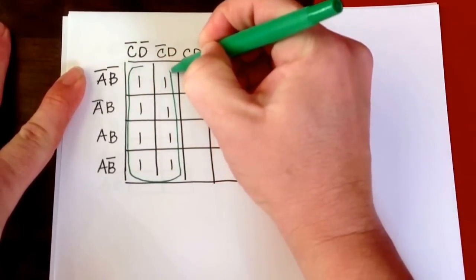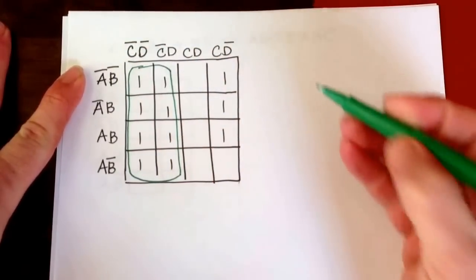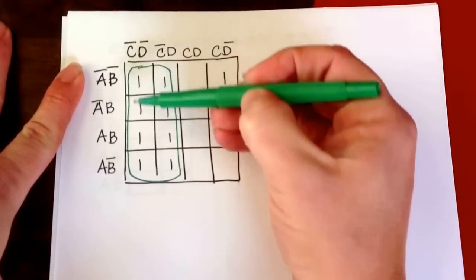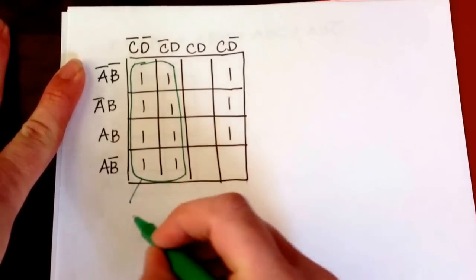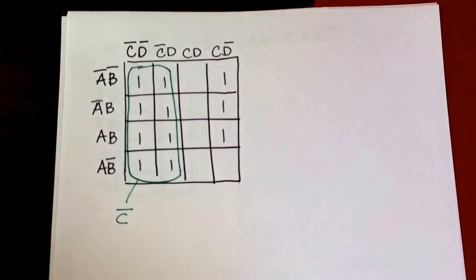For that group, as I move all the way through here, A and B change, and from here to here D changes, so this simplification is simply not C. Then I want to look for my next largest group.